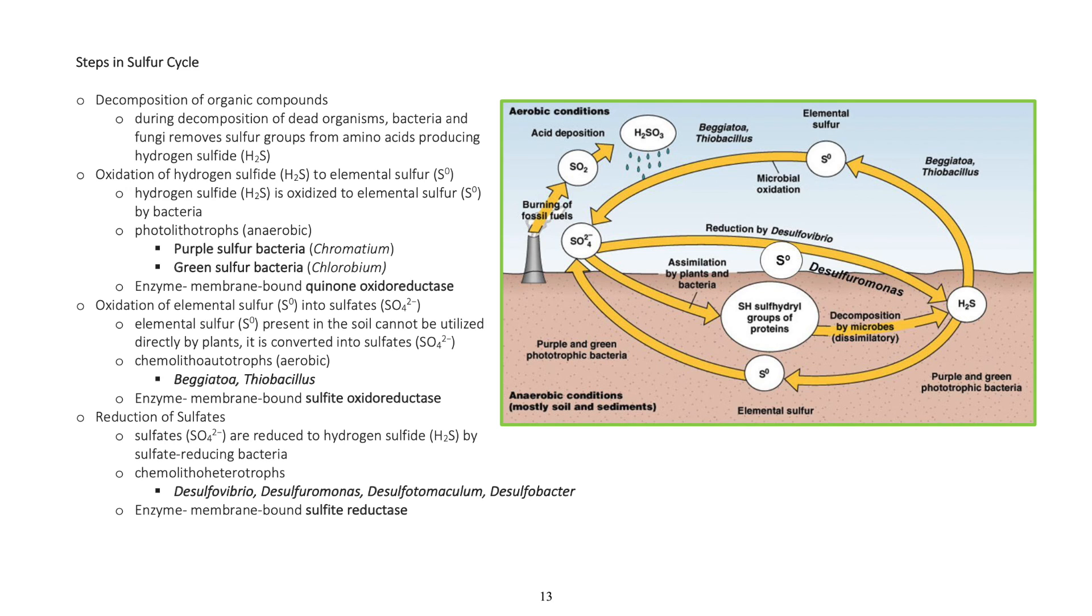Chemolithotrophs (aerobic): Beggiatoa, Thiobacillus. Enzyme: membrane bound sulfide oxidoreductase.